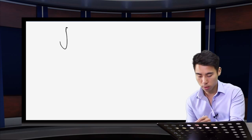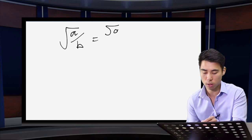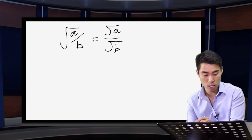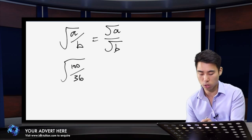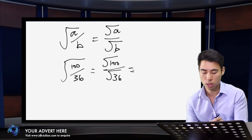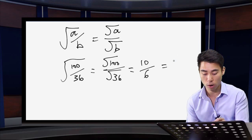Rule number 1: if I have the square root of a fraction, I can split it up such that I have the square root of the numerator over the square root of the denominator. So if I have the square root of 100 over 36 — notice both of those are square numbers — that's the same as the square root of 100 over the square root of 36, which gives me 10 over 6, and you can cancel that down further.